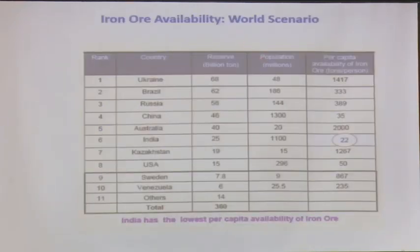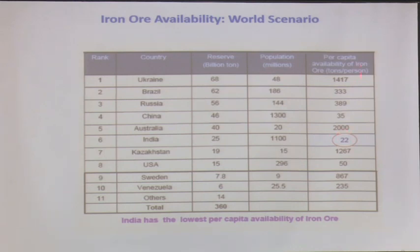Looking at iron ore availability in a world scenario — we all think we are very rich in iron ore, but that is not so. Yes, we have good quality iron ore, but if you look at the per capita availability of iron ore, India is probably among the lowest of major deposits. It is only 22 tons of iron ore per person, the lowest per capita availability amongst all major countries.